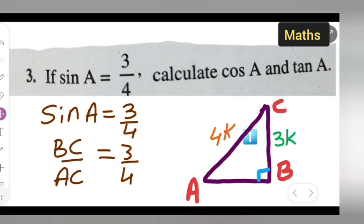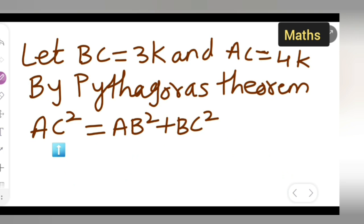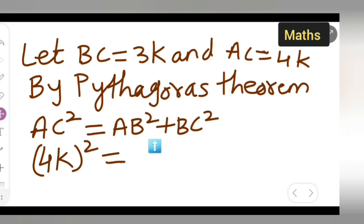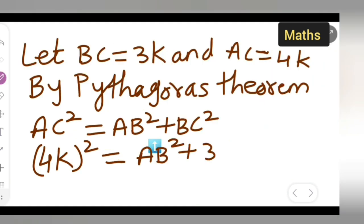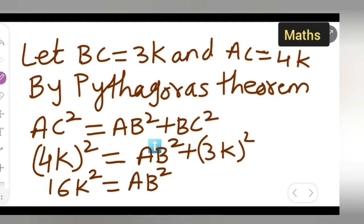AC squared — do we know AC? Yes, it is 4k, so we write 4k squared. Is AB given? No, we need to find it, so write AB squared as it is. BC is 3k, so we write plus 3k squared. Squaring gives us 16k squared equals AB squared plus 9k squared.